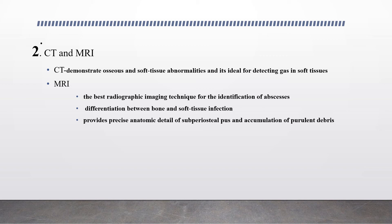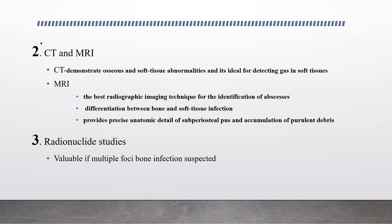CT demonstrates osseous and soft tissue abnormalities and is ideal for detecting gas in soft tissue. MRI is the best radiographic imaging technique for identification of abscess; it provides precise anatomic details of subperiosteal pus and accumulation of purulent debris, and differentiates between bone and soft tissue infection. Radionuclide studies are valuable if multiple foci of infection are suspected.